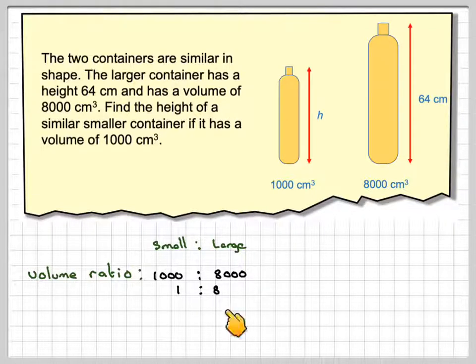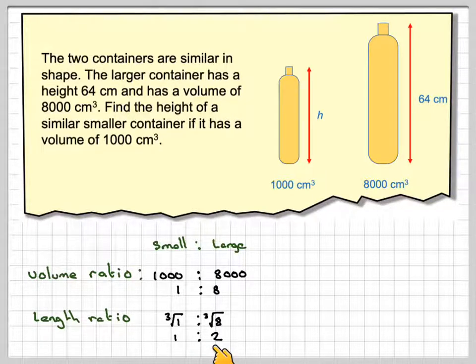So if we need to find a length ratio from a volume ratio, then the length ratio will be the cube root of 1 to the cube root of 8, which gives you a ratio of 1 to 2.